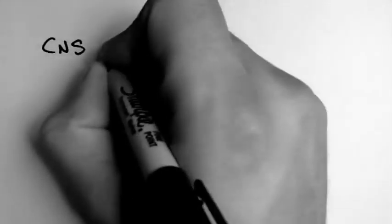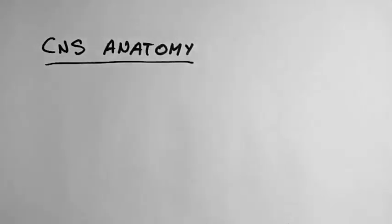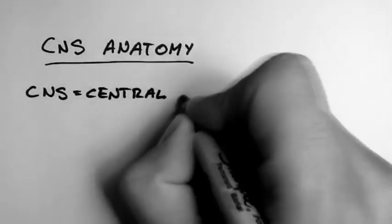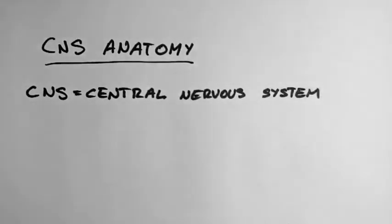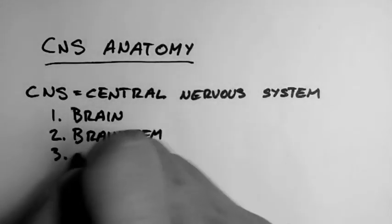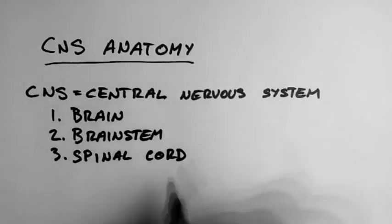This video is an introduction to CNS Anatomy. CNS stands for Central Nervous System and it's comprised of three parts: the brain, the brainstem, and the spinal cord.